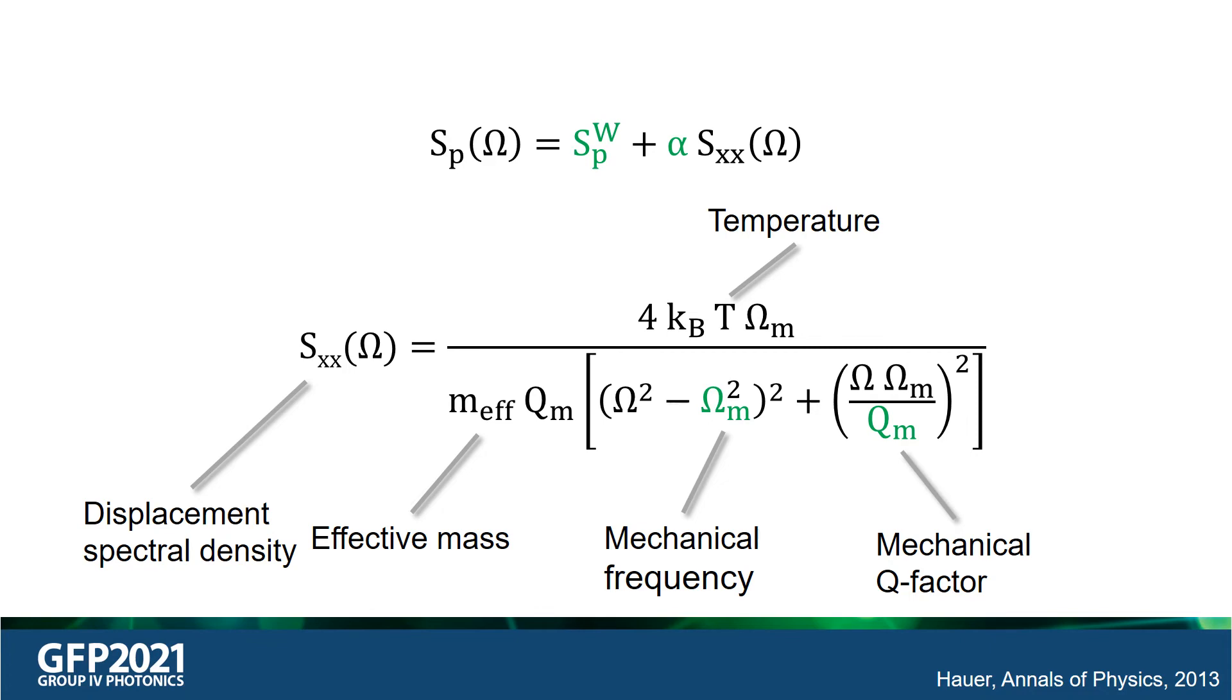Where M_effective is the effective mass of the different mechanical modes. This is calculated using COMSOL simulation, where T is the temperature that is set during the experiment. The four parameters highlighted in green - the mechanical frequency, the mechanical quality factor, alpha which is the transduction factor, and Sp_w which is the white noise background - are obtained by fitting the different resonance peaks.